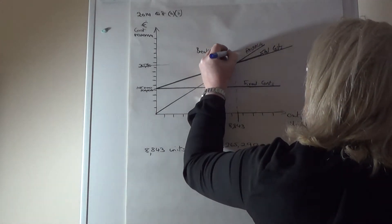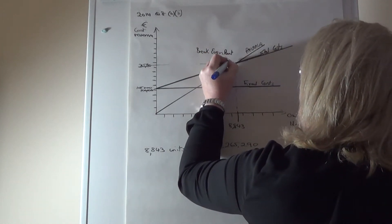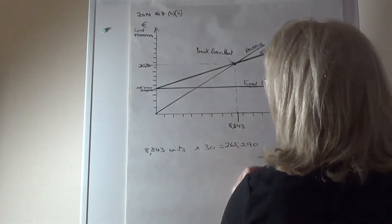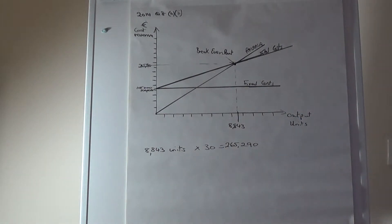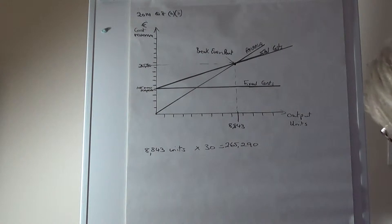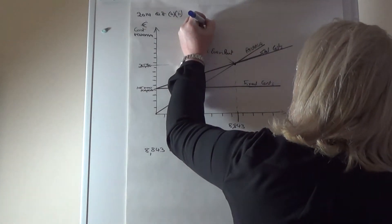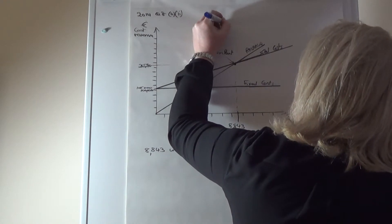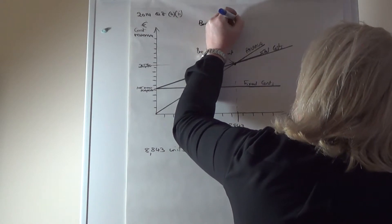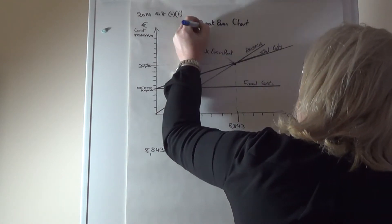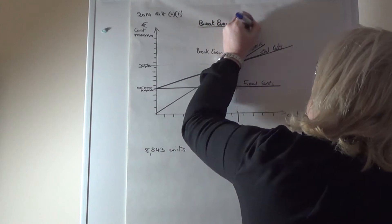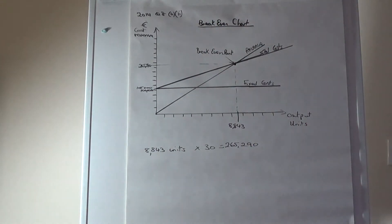The break-even point is where those two lines intersect. That's your chart done — just label it as your break-even chart.